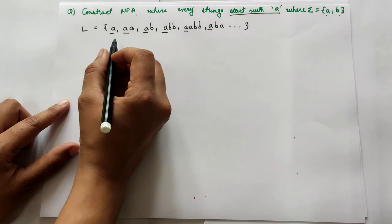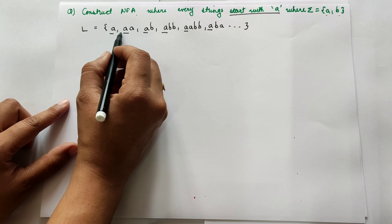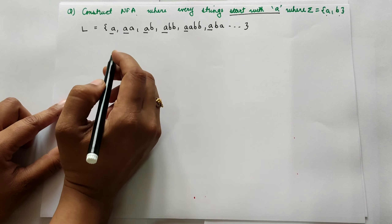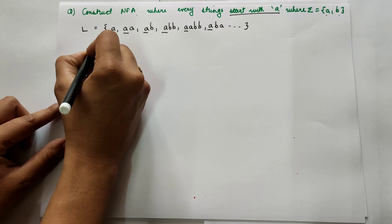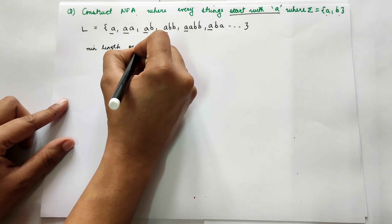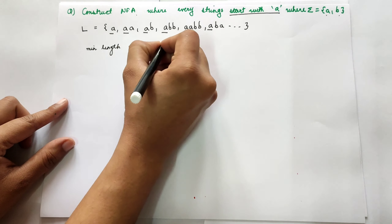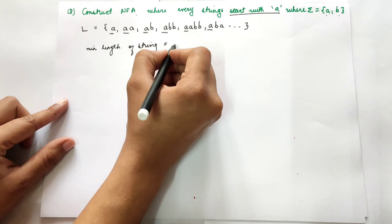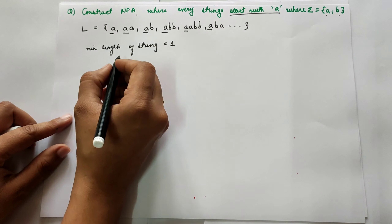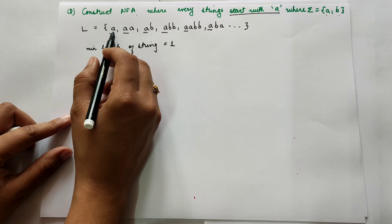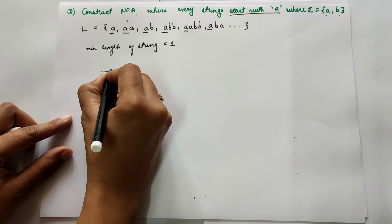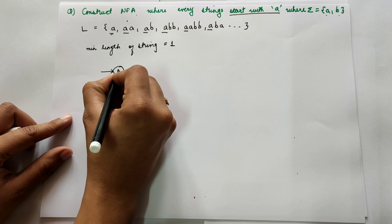We have to draw the NFA for strings that must start with an A. The minimum length of a string here can be 1, because the string can be just A. The minimum number of states can be calculated by the formula: minimum length of a string plus 1, which gives us 2 states.